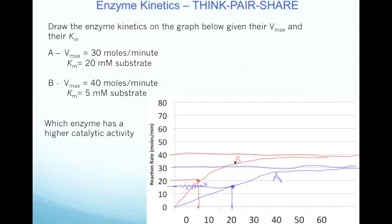And so in the think-pair-share, I asked you which enzyme has a higher catalytic activity. What do these graphs tell you about the enzyme? Well, let's look at both parameters that I gave you. One is Vmax. This is the maximal rate that this enzyme can work. Well, enzyme B has a higher maximal rate than enzyme A. So if you're just looking at maximal rates alone, you could say that enzyme B is better because it can work at a faster rate.